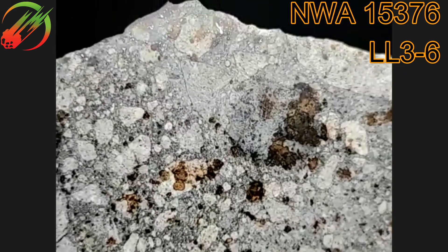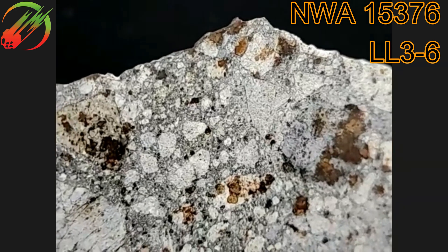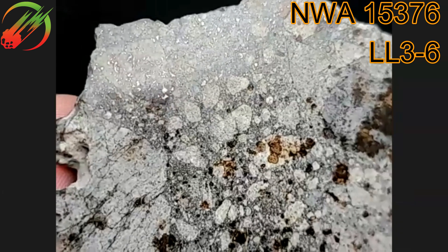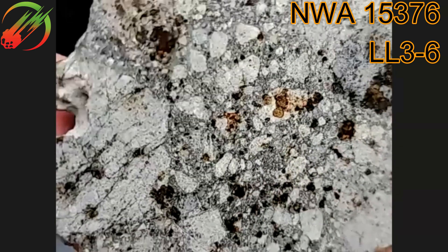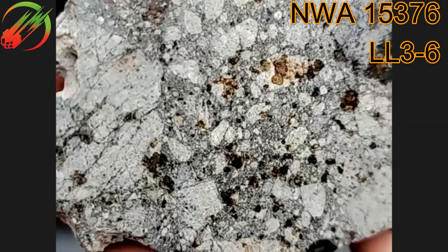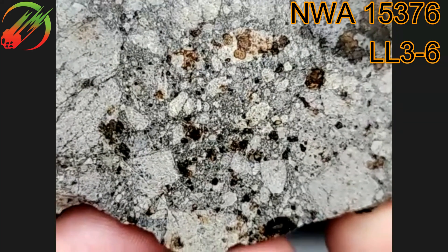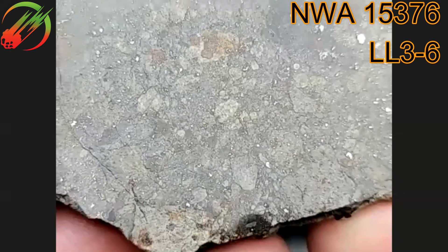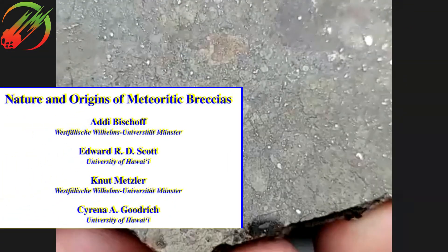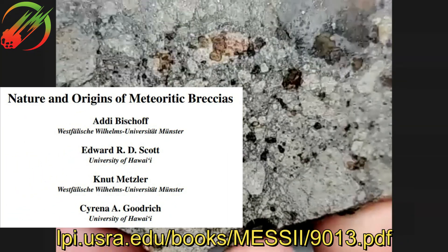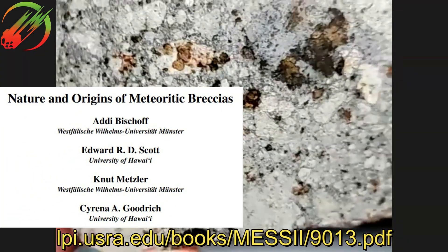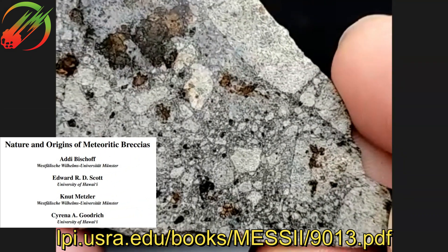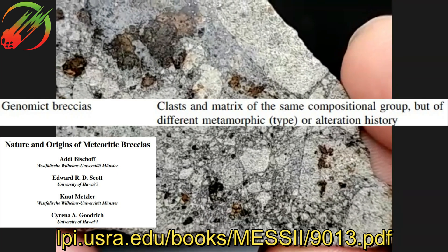Breccias are generally a product of impact. Many of our meteorites are not the same thing through and through — they've got different bits and pieces to them. There's a really good paper on meteorite breccias in the early solar system called 'Nature and Origins of Meteorite Breccias' by Bischoff, Scott, Metzler, and Goodrich.